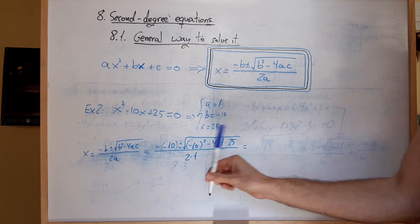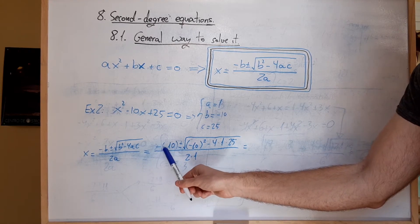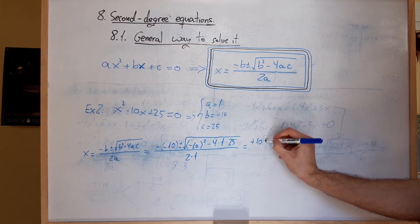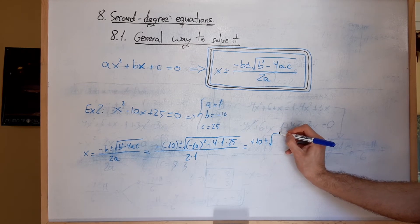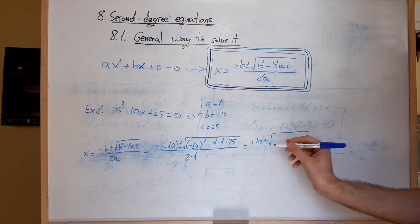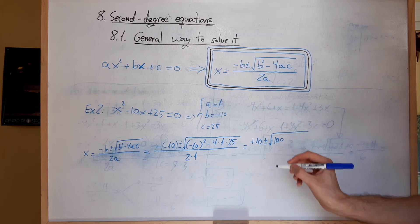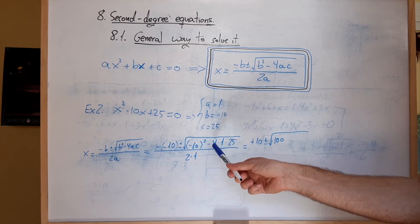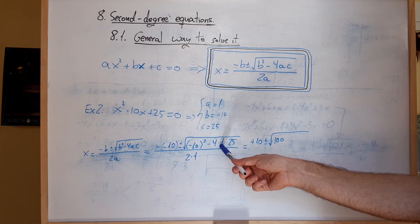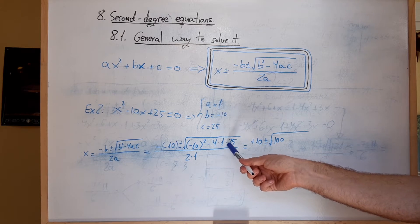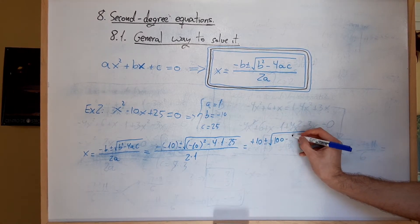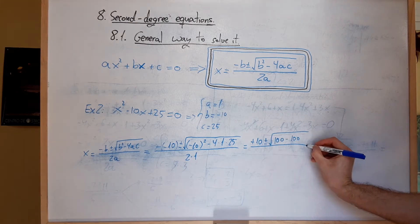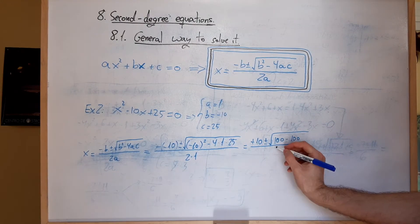In this case we have minus times minus, which is plus. Plus-minus square root of 10 squared, which is 100. 100 minus 4 times 1, which is 4. 4 times 25, which is 100. Over 2 times 1, which is 2.